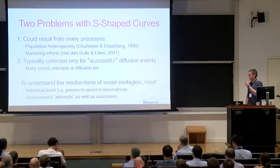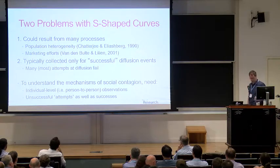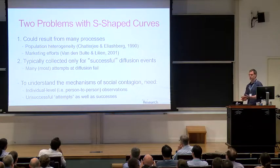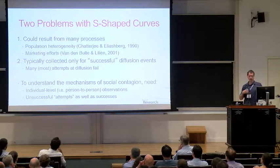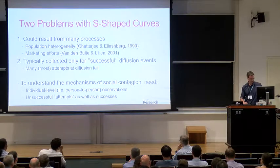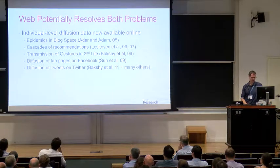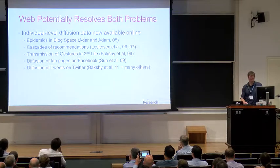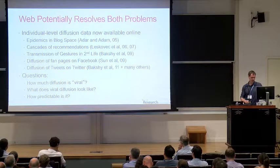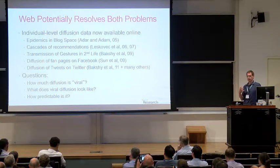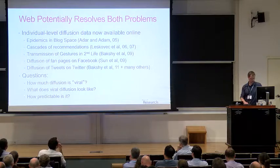If we really want to understand the mechanisms by which things spread, we need data satisfying two criteria. First, it has to be at the individual level — we must see a thing spreading from one person to another over many such events. Second, we want something close to a complete census of all the things that are trying to spread. The web has been very helpful here and there's a growing literature in computer science exploiting digital data sources. We can start to ask new questions like: how much diffusion is actually viral, and what do we even mean by viral?